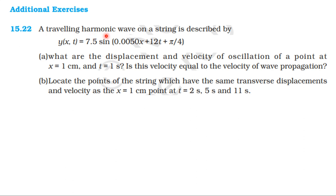A traveling harmonic wave on a string is described by y equal to 7.5 sin(0.005x plus 12t plus 5π/4). What are the displacement and velocity of oscillation of a point at x equal to 1 cm and t equal to 1 second?